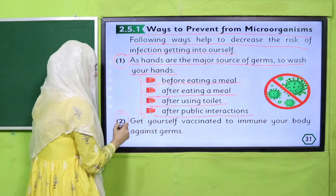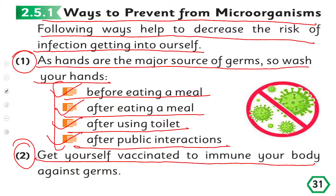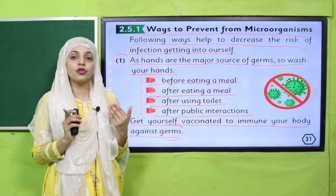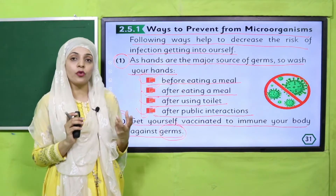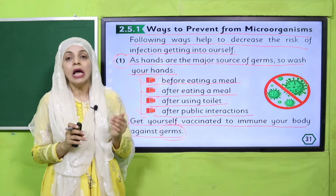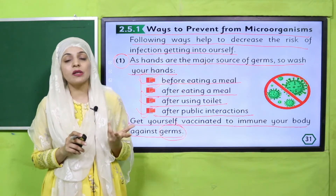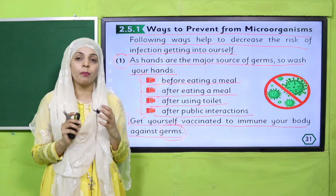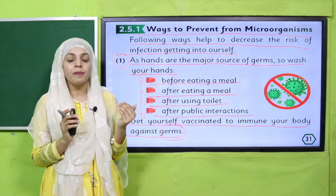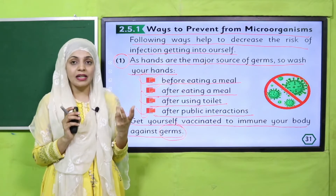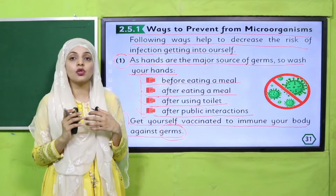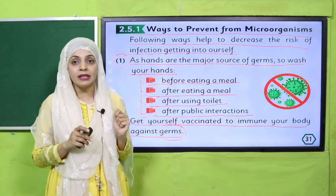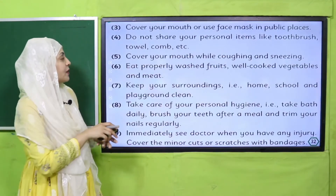Number two: Get yourself vaccinated to immune your body against germs. Aapko chahiye ke aap apni body ko immune karne ke liye vaccine lagwayein taake different germs ya microbes aapko affect na kare. Basically, a vaccine is a medicine made from germs — like penicillium. There are also different vaccinations such as the coronavirus vaccination. These vaccinations help us protect ourselves from different viral diseases.